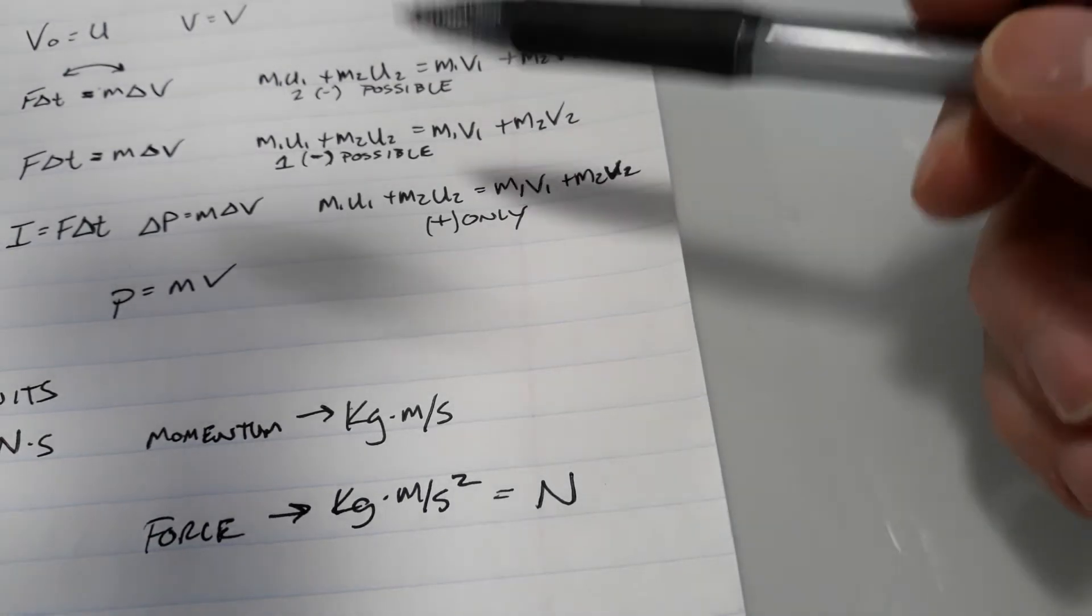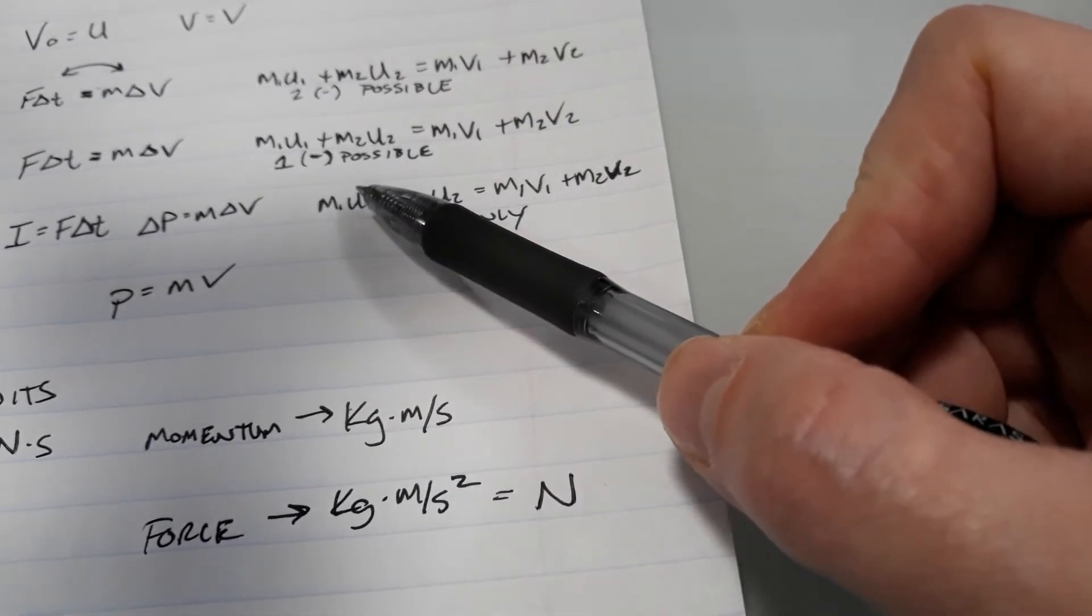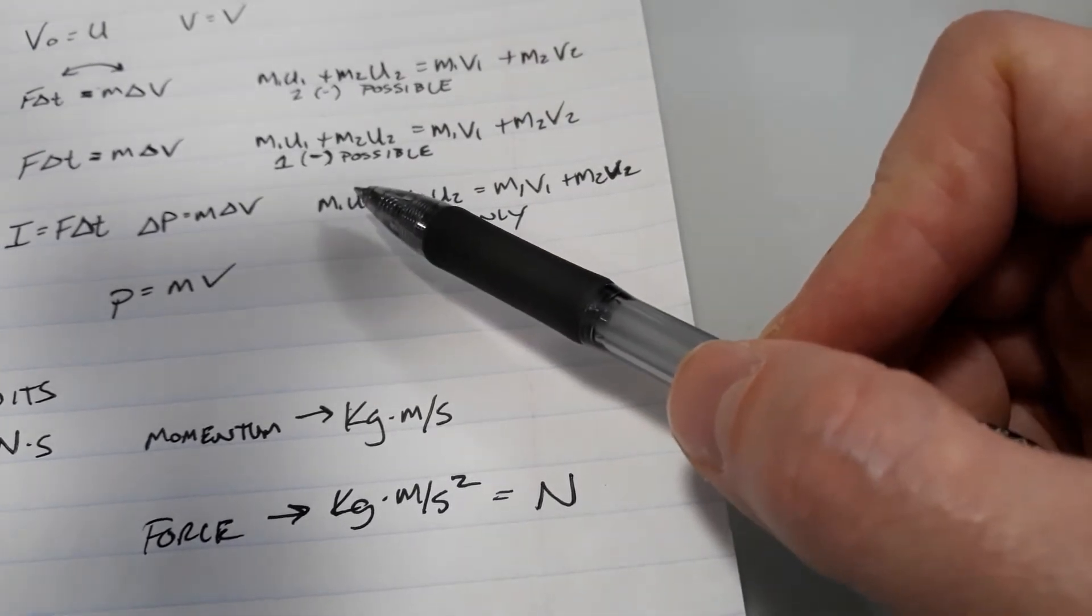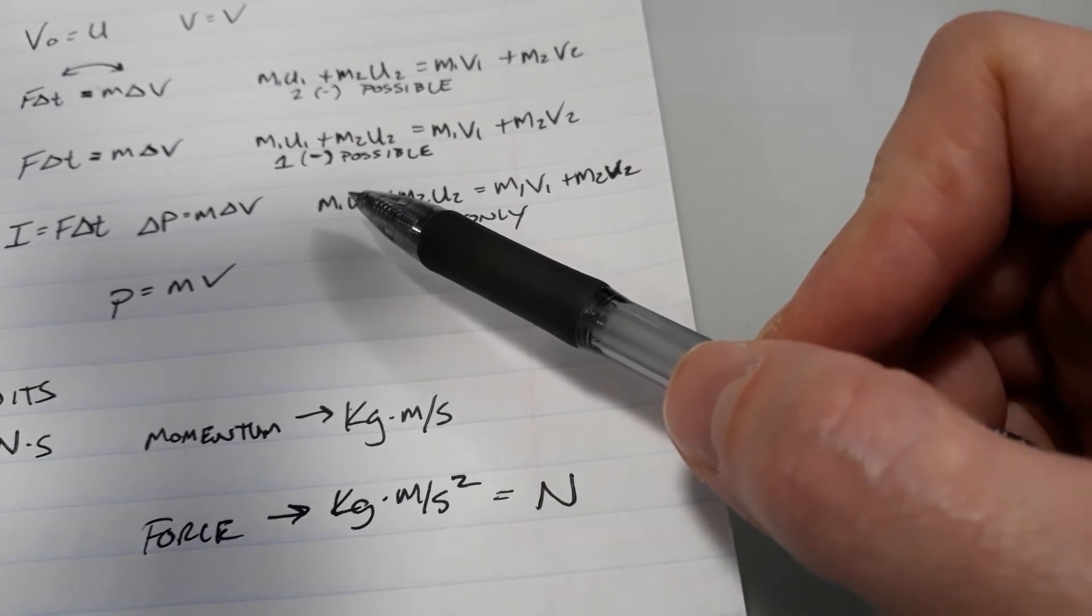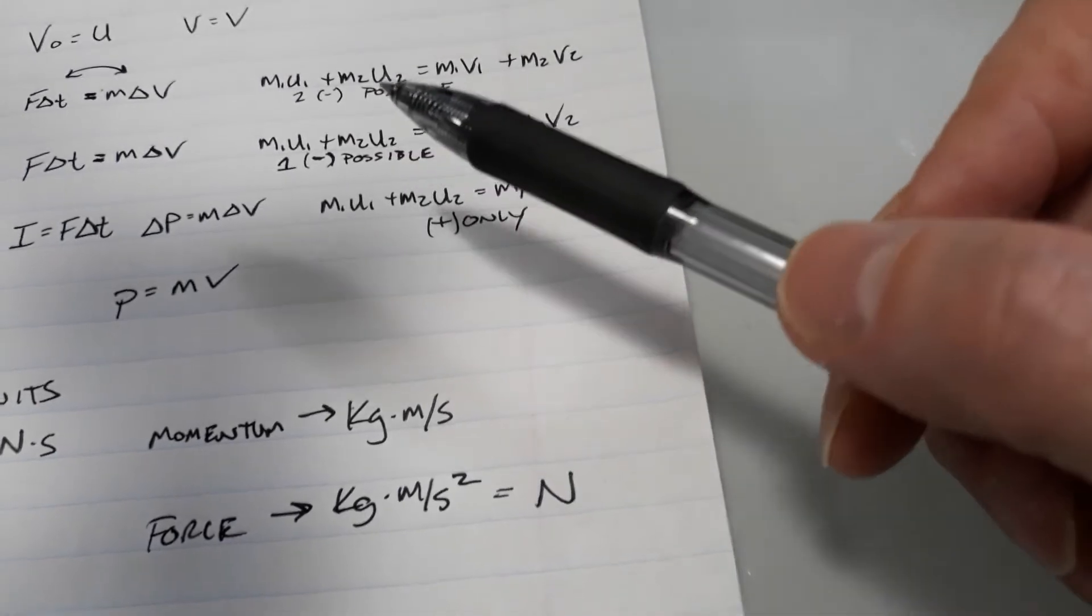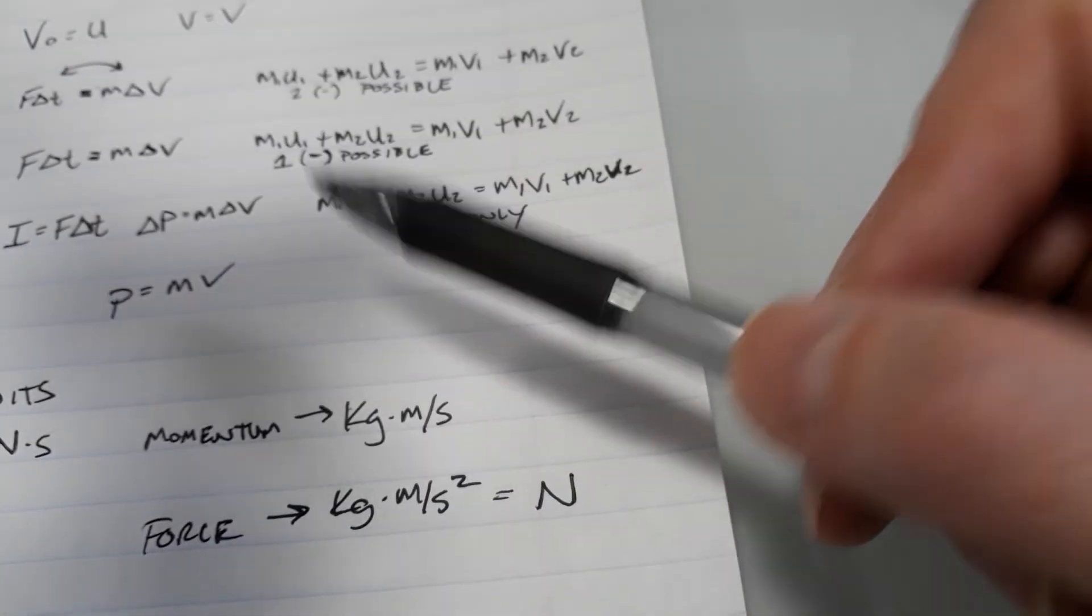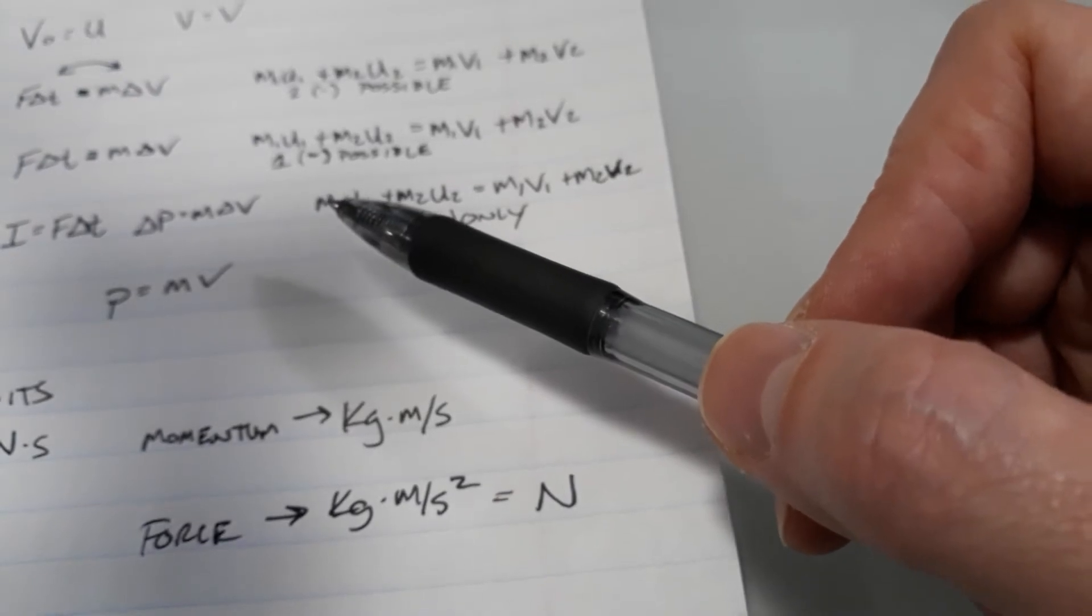I personally find it much easier to use the letter U. And look, it's in alphabetical order. U, V, initial, final. So there is a kind of logic to it. I know the letter U doesn't really make sense for velocity, but it is much more convenient when you don't have to write the subscripts.